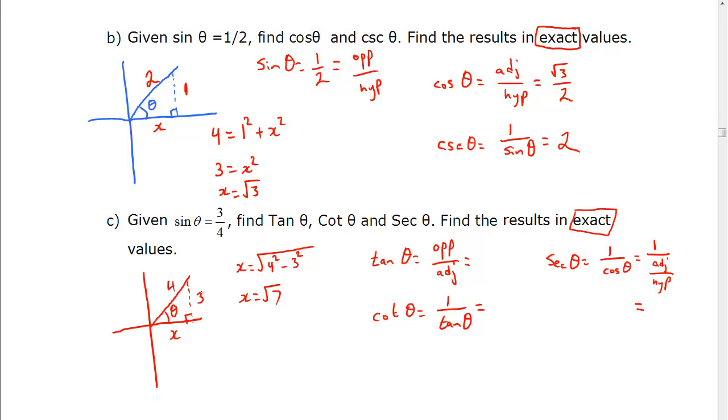So tan, opposite, well, opposite θ is 3. Adjacent is x, which is √7. So 3/√7. Cotangent is the reciprocal of that. So that's going to be √7/3. Flip that over. Secant, well, that's 1 over cosine, which is 1 over the adjacent over the hypotenuse. Which means the hypotenuse comes on top. And we get the hypotenuse, which is 4, divided by adjacent, which is x, or √7. And so there's the exact values of those three trig functions.